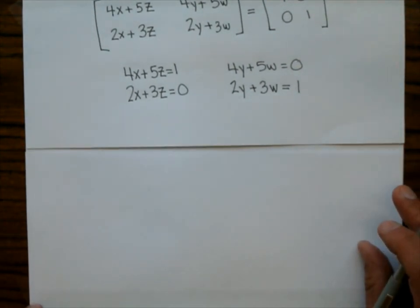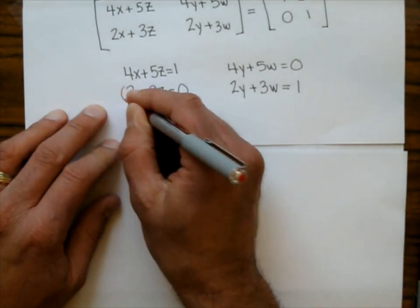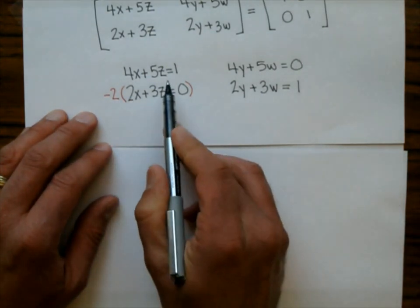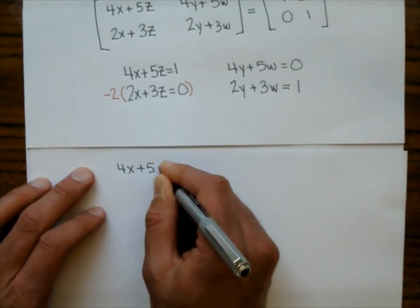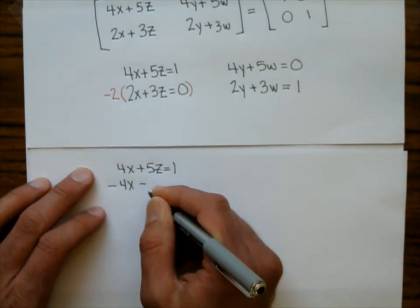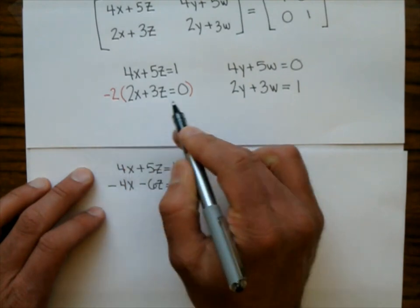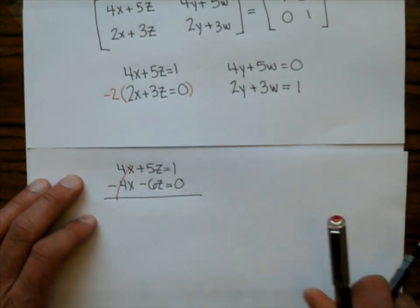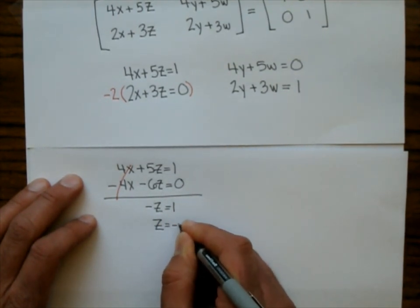I'm going to kill off x by multiplying the bottom equation by negative 2, which puts opposites there. Writing out both equations: 4x + 5z = 1, and negative 4x − 6z = 0. Adding those together, the x terms cancel and I get negative z = 1, so z = −1.